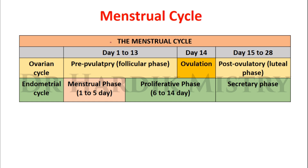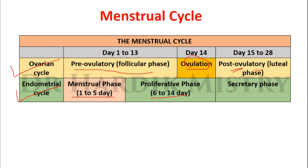The menstrual cycle includes both the ovarian cycle and the endometrial cycle. In the ovarian cycle: day 1 to 13 is the pre-ovulatory or follicular phase, day 14 is ovulation, and day 15 to 28 is the post-ovulatory or luteal phase. In the endometrial cycle: menstrual phase is day 1 to 5, proliferative phase is day 6 to 14, and secretory phase is day 15 to 28.